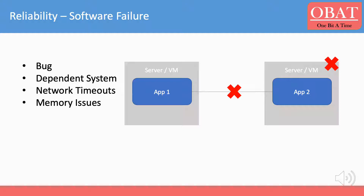Many times system failures are the result of underlying software. A new deployment may introduce a bug which can cause an outage to the system. A dependent system may fail due to faults or become unreachable due to network issues.